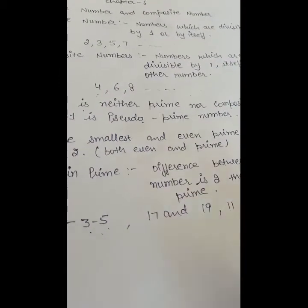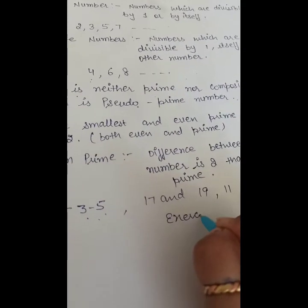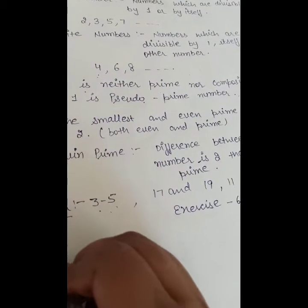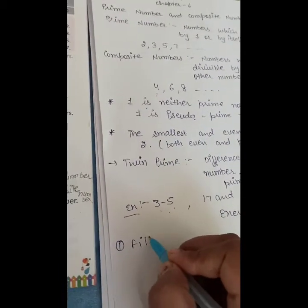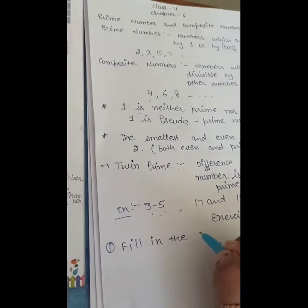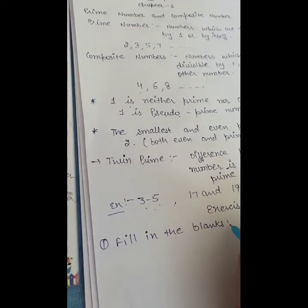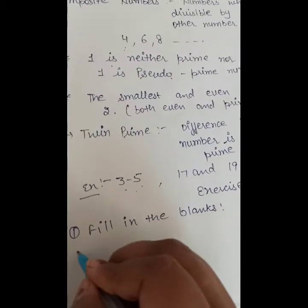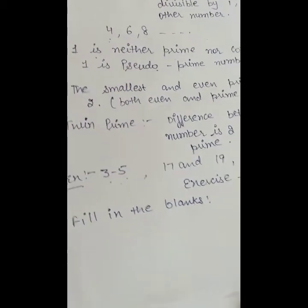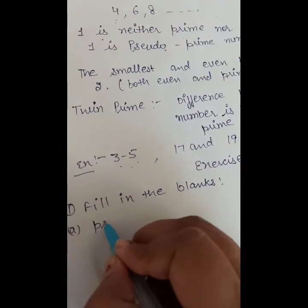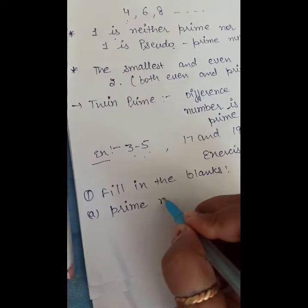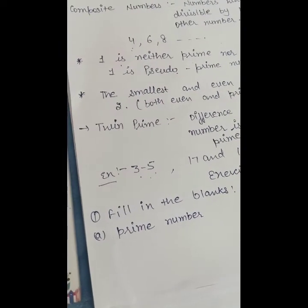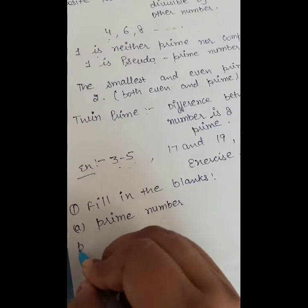Now let's come to the exercise. First part is filling the blanks. A natural number which has exactly 2 factors is called a prime number. A natural number which has more than 2 factors is a composite number.